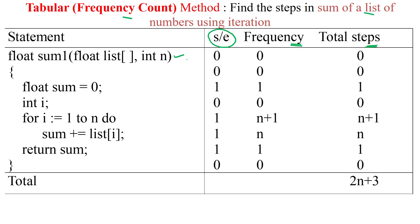For the function definition, we are not counting any steps, so the frequency is also zero. Then there is a declaration and assignment operation. An assignment operation takes one unit of time, so the number of steps for execution is one, and it is declared only one time, giving a total execution count of one. The next declaration consumes zero units of time, so its total is zero.